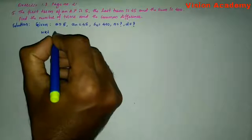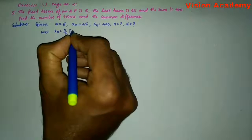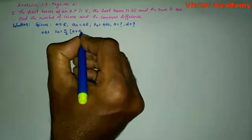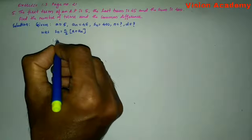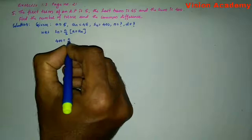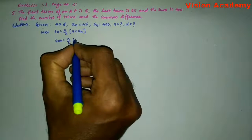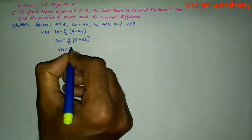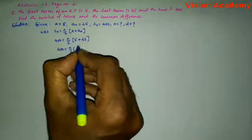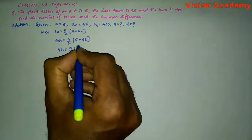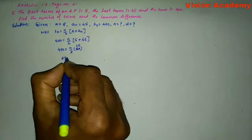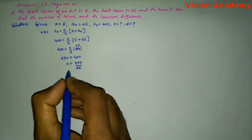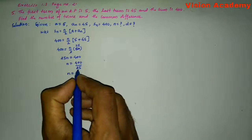We know that Sn is equal to n by 2 into A plus An, where An is the last term. So 400 equals n by 2 into 5 plus 45. Simplifying, 400 equals n by 2 into 50, which gives 25n equals 400, therefore n equals 400 divided by 25, so n equals 16.